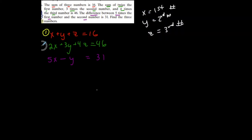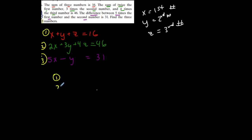Now I have my system of equations: one, two, three. The sum of the three numbers is 16; the sum of twice the first, three times the second, and four times the third is 46; and the difference between five times the first and the second is 31. The third equation is already only in terms of two variables. We want to take a system of three into a system of two, so I'm going to use equations one and two to eliminate z.